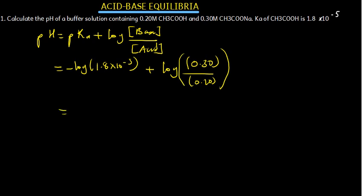Working it out: negative log of 1.8 × 10⁻⁵ gives 4.744. Then plus log(0.30/0.20) = log(1.5) = 0.17609. Adding: 4.744 + 0.17609 gives a pH of 4.92. So 4.92 is the pH of the buffer solution.